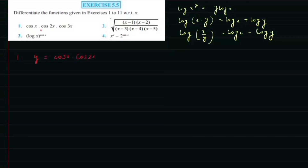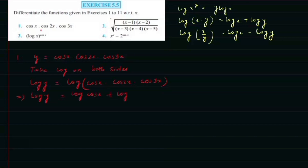y is equal to cos x into cos 2x into cos 3x. We will take log on both sides. We get log y = log(cos x · cos 2x · cos 3x). Using the multiplication property of logarithm, it becomes log cos x + log cos 2x + log cos 3x.